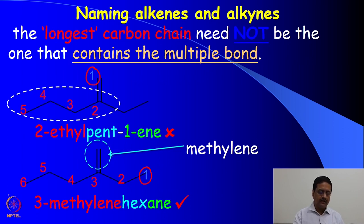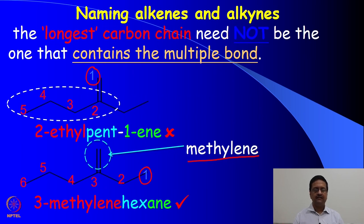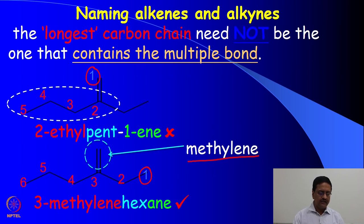The longest chain is formed by numbering from the other end giving 1, 2, 3, 4, 5, and 6, so it becomes hexane and the substitution here is a methylene substitution. When we write the name of this compound we do not take the longest chain containing the C=C double bond; rather we take the longest chain which does not contain the double bond, and the double bond is outside the chain. So we write this as 3-methylenehexane.